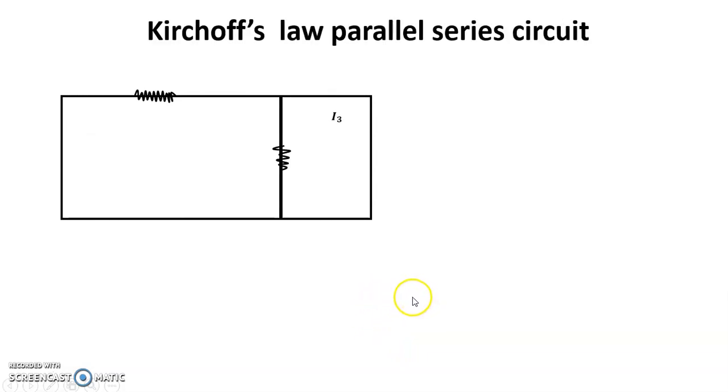This is Kirchhoff's law parallel series circuit. I will also show that it holds Kirchhoff's law. Now you will see that current is going here to here this way, to the 6 ohm, and current is also going I2.